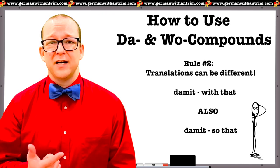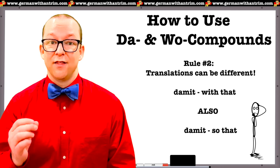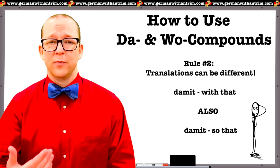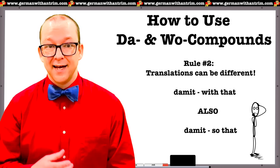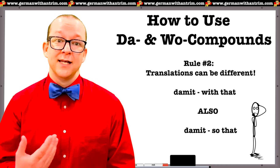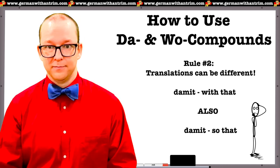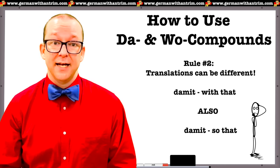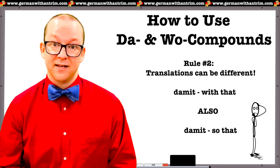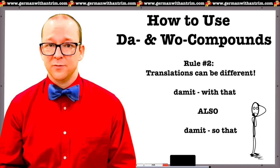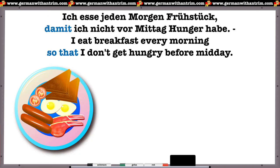Number two: while a lot of Da and Wo compounds are simply translated as 'that' or 'what' added to the usual prepositional translation, this is not always the case — some take on an entirely new translation. For example, damit can mean 'with that,' but it can also mean 'so that.' For instance: "Ich esse jeden Morgen Frühstück, damit ich nicht vor Mittag Hunger habe." — I eat breakfast every morning so that I don't get hungry before midday.